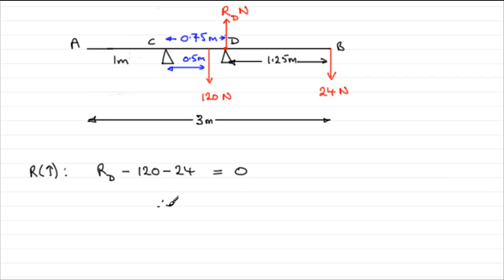All you need to do is rearrange this, and R_D equals 120 plus 24, which is 144. Don't forget the units: Newtons. So the reaction at support D is 144 Newtons acting upwards.